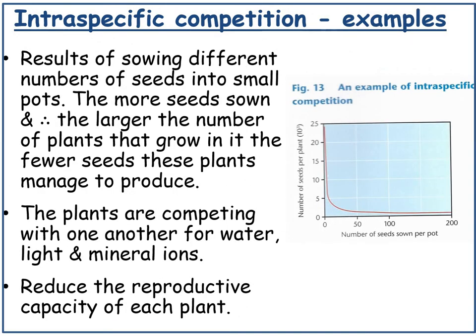Therefore there will be fewer territories and fewer breeding pairs, so the population size will be smaller. Another example: a graph shows the results of sowing different numbers of seeds into small pots. The more seeds sown, the larger the number of plants, but the fewer seeds each plant produces. The plants are competing with one another for water, light, and mineral ions, and as you increase the number per pot, you reduce the reproductive capacity of each plant.